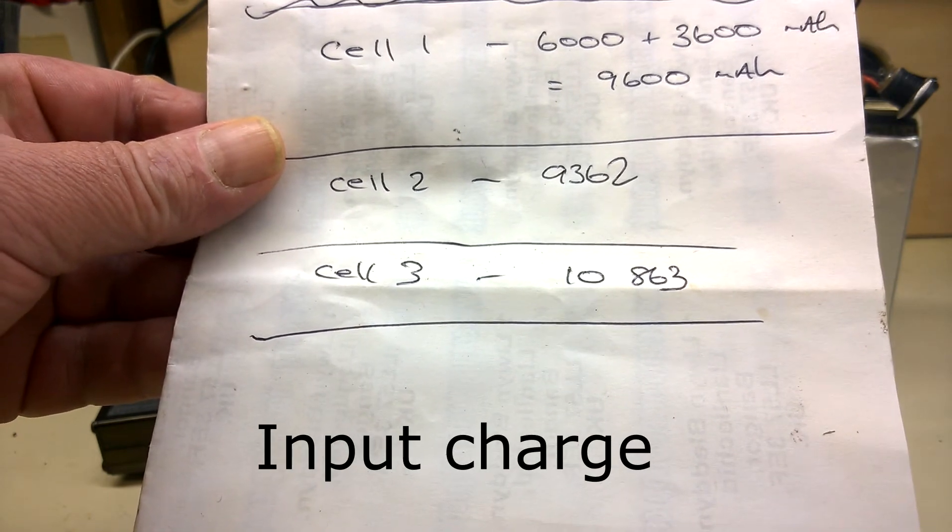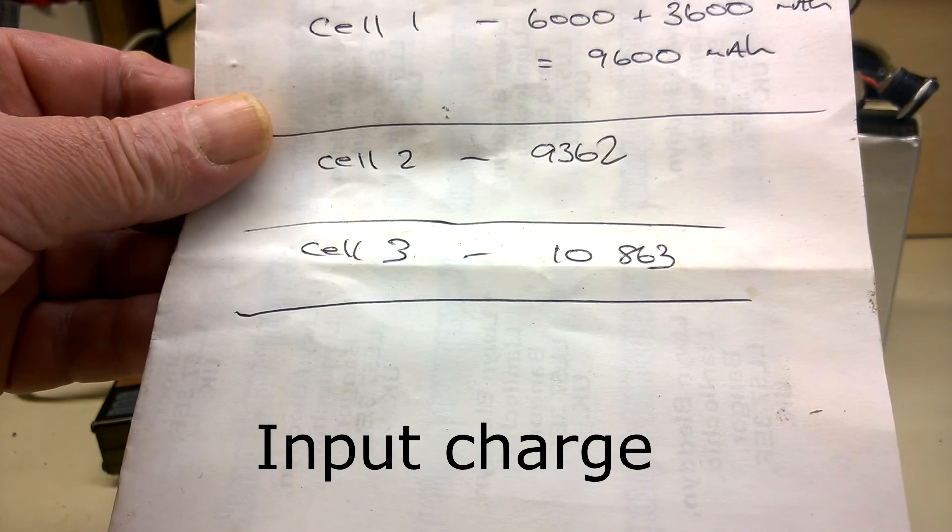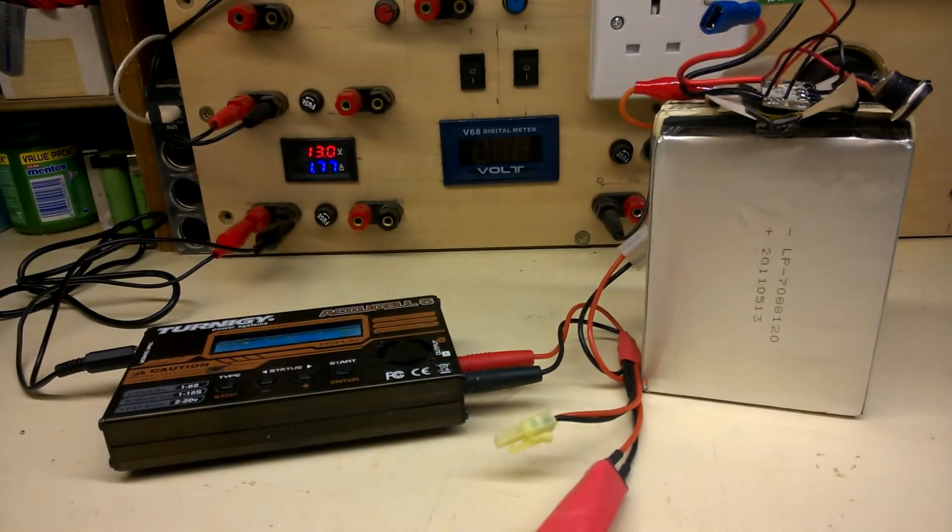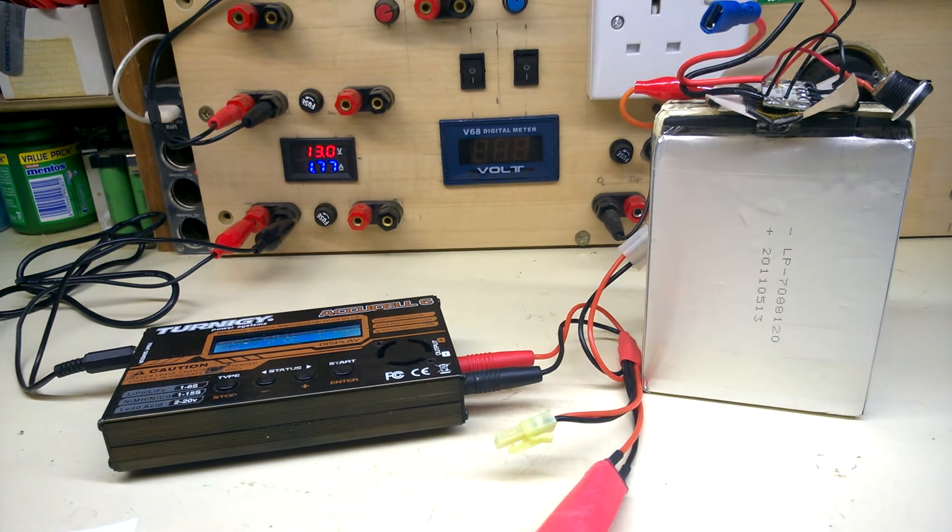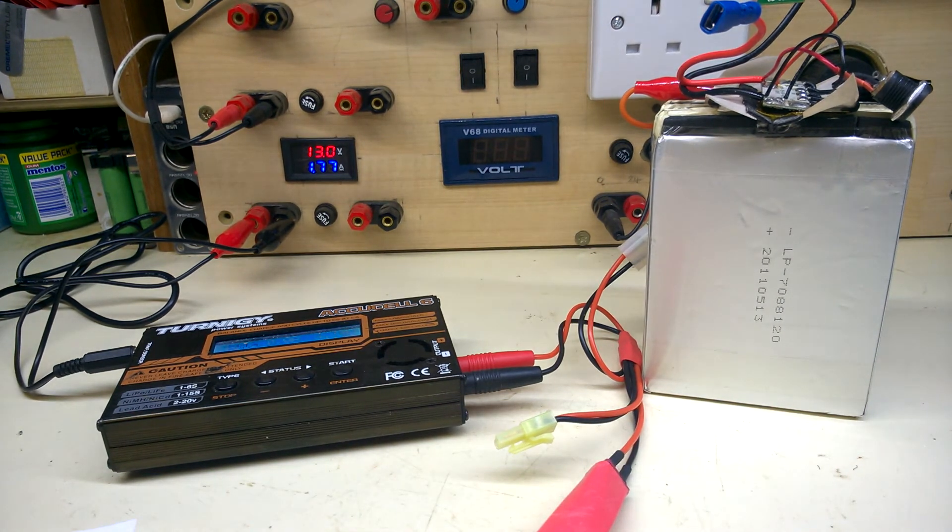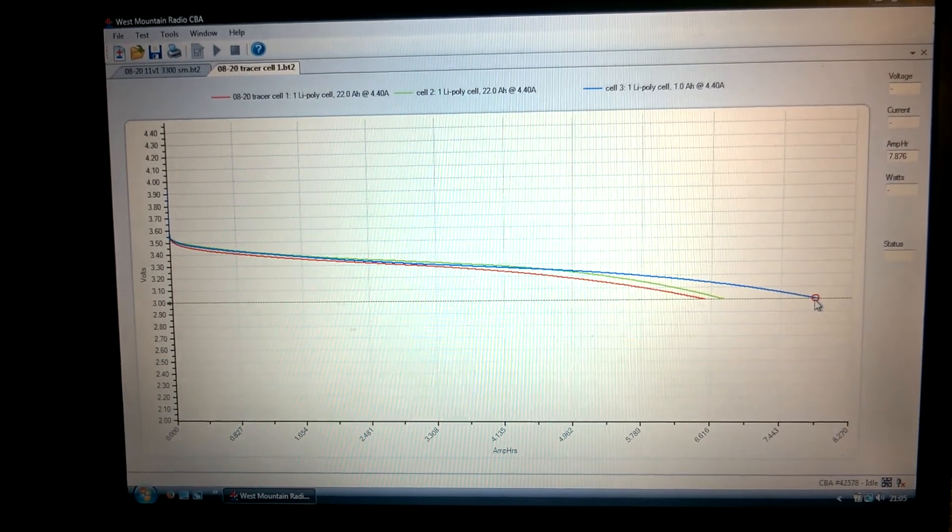Cell 1, 9.6. Cell 2, 9.3. Cell 3, 10.8. Yep, I've got plenty of time. It's going to be about two to four weeks before my replacement bits arrive, so I'll discharge them separately.